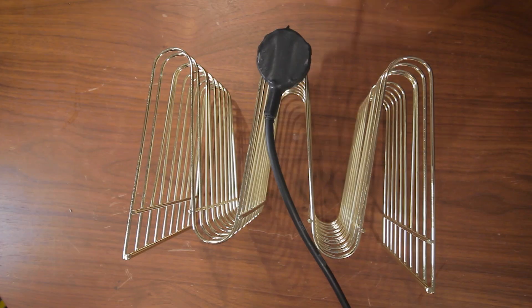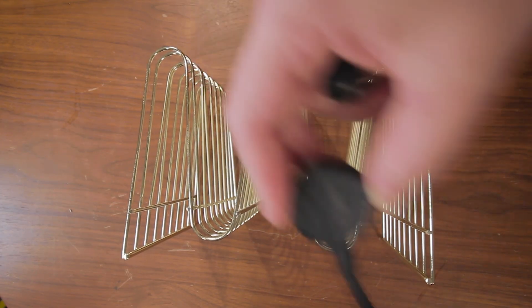So a contact microphone works by picking up vibrations off the surface of whatever object you attach it to. And that's where the name comes from. It has to be in contact with the object you want to record. And this allows you to hear sounds and frequencies that your typical microphones don't pick up.